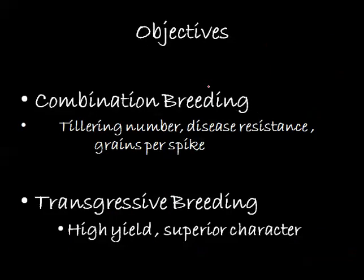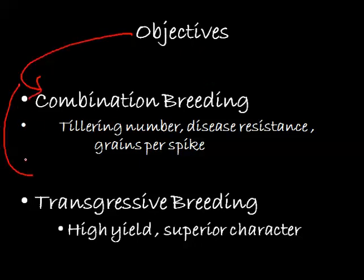We can divide the objectives of hybridization into two types: first is combination breeding, and second is transgressive breeding.